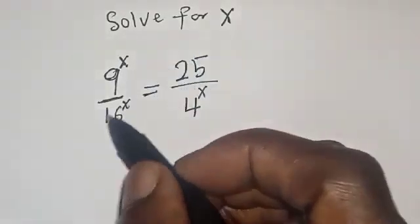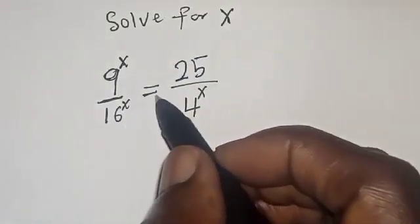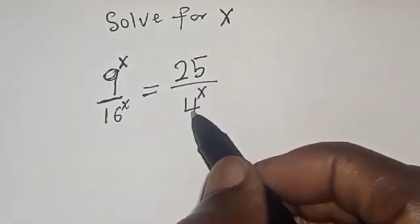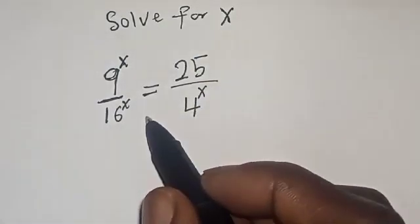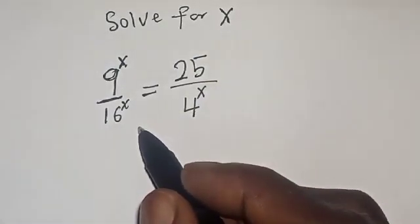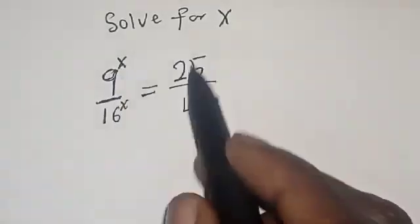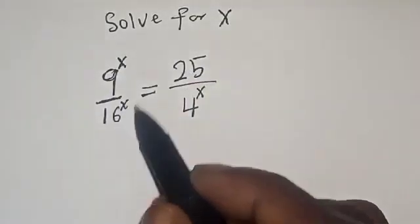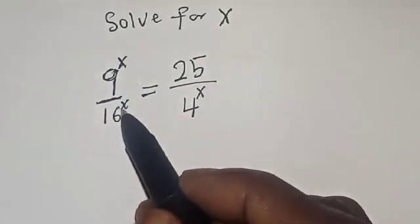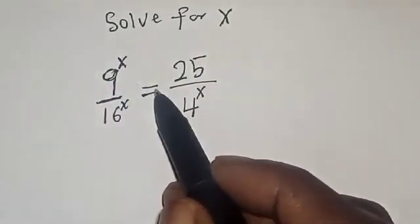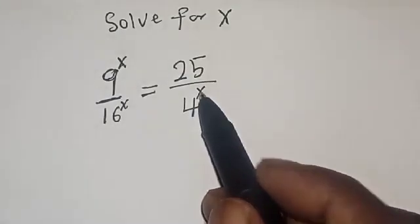So for x: 9 raised to power x divided by 16 raised to power s is equal to 25 divided by 4 raised to power x. Hi everyone, welcome to my class. In this class, we quickly want to find the value of s from this given exponential equation: 9 raised to power x divided by 16 raised to power s is equal to 25 divided by 4 raised to power x.